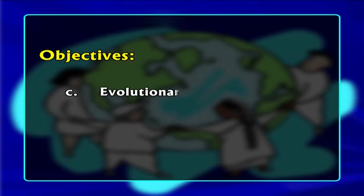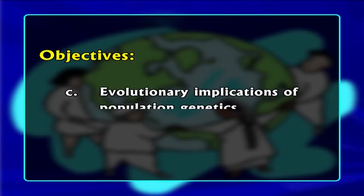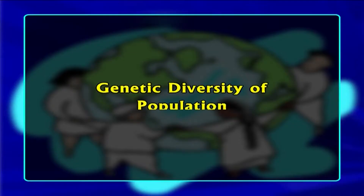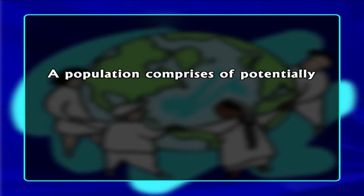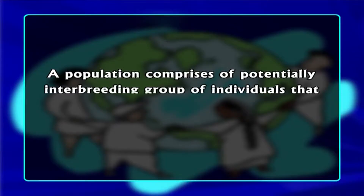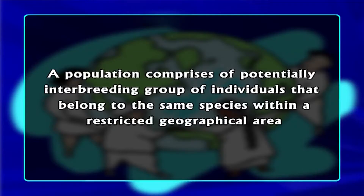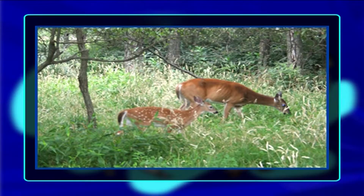And finally, we will highlight the evolutionary implications of population genetics. First, let's discuss the genetic diversity of populations. As you know, a population comprises of a potentially interbreeding group of individuals that belong to the same species and live within a restricted geographical area. Animal and plant populations significantly vary in size, structure and dynamics.